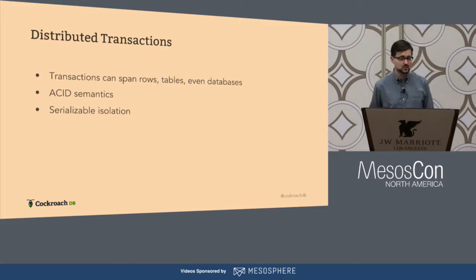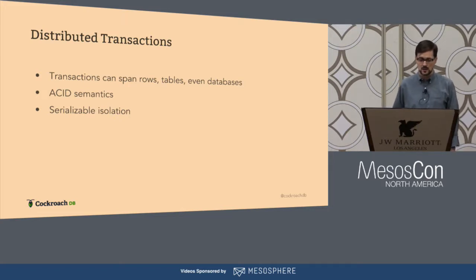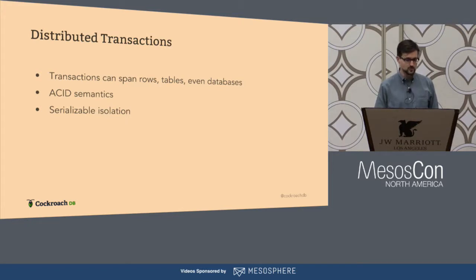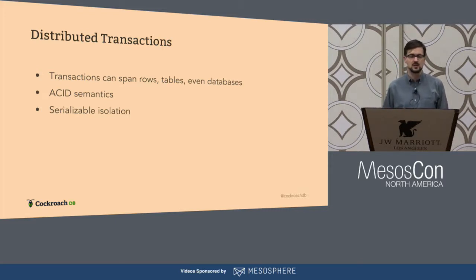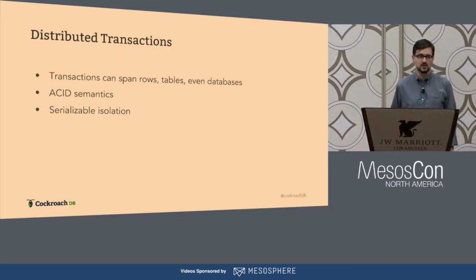We have distributed transactions which can span rows, tables, even databases. There are no restrictions on what can go into a transaction in CockroachDB. There is a limitation on the size of a write transaction, but no limitation on what tables or other objects can be included. CockroachDB defaults to serializability, which is the highest of the four standard SQL isolation levels, because we think it's important that your database provide the maximum amount of consistency. Trying to think about all the different ways things can go wrong in lesser isolation levels is really difficult, and we don't think that's a good trade-off for developers.